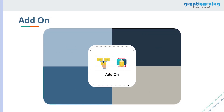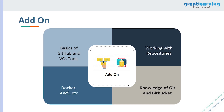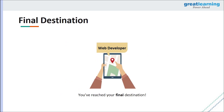Now that we've covered all five steps to becoming a web developer, you should also have some knowledge of Git and GitHub, be able to work with repositories, and know a bit about Bitbucket. If you want to deploy your website, you can use Docker or AWS. Congratulations — you are now a web developer!